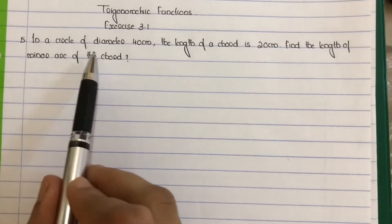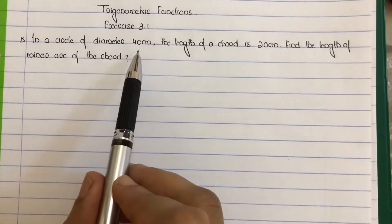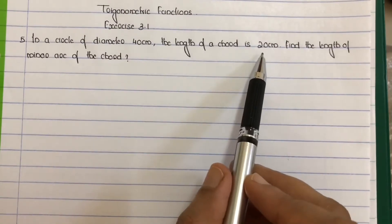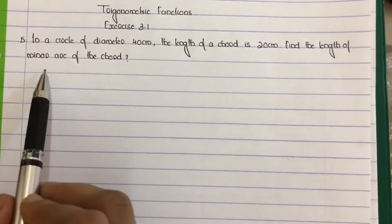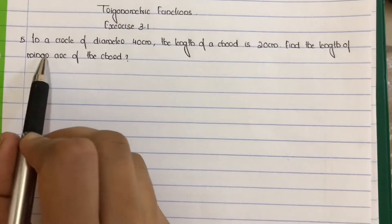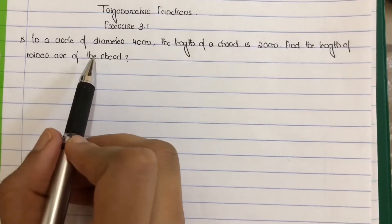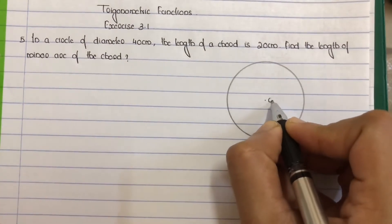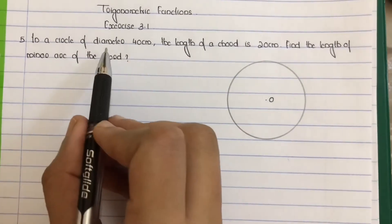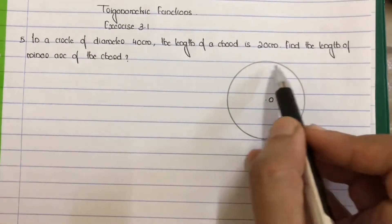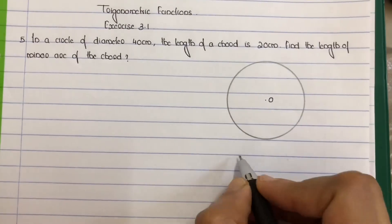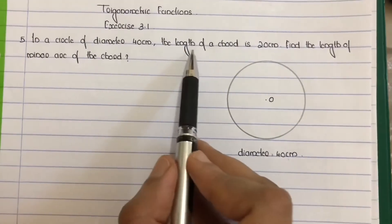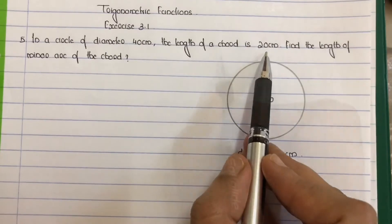Question number 5: In a circle of diameter 40 centimeters, the length of a chord is 20 centimeters. Find the length of the minor arc of the chord. Consider a circle with center O. Given: diameter is 40 centimeters, length of chord is 20 centimeters.